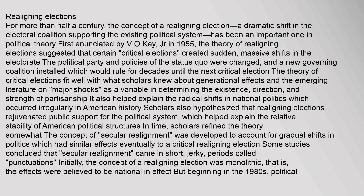For more than half a century, the concept of a realigning election — a dramatic shift in the electoral coalition supporting the existing political system — has been an important one in political theory. First enunciated by V.O. Key Jr. in 1955, the theory of realigning elections suggested that certain 'critical elections' created sudden, massive shifts in the electorate. The political party and policies of the status quo were changed, and a new governing coalition installed which would rule for decades until the next critical election.